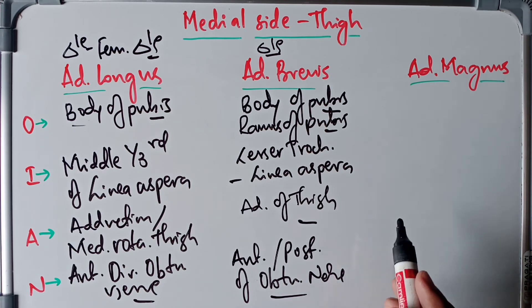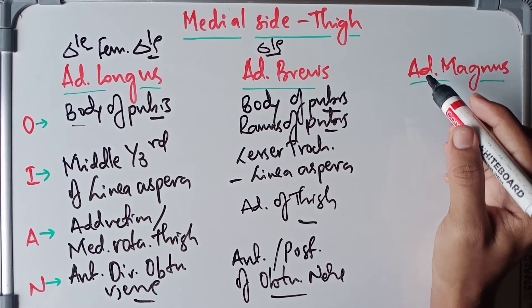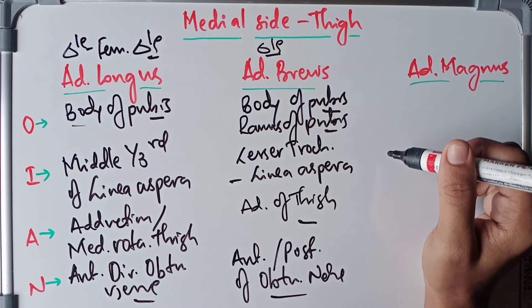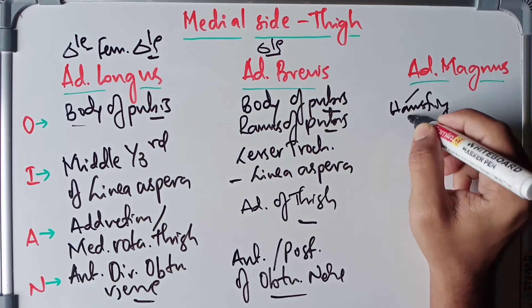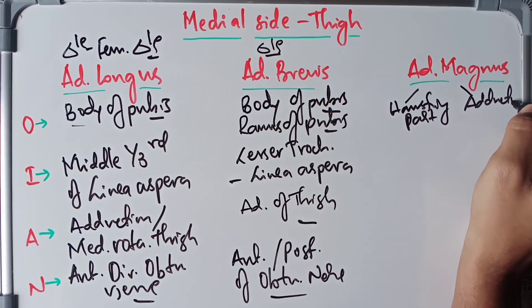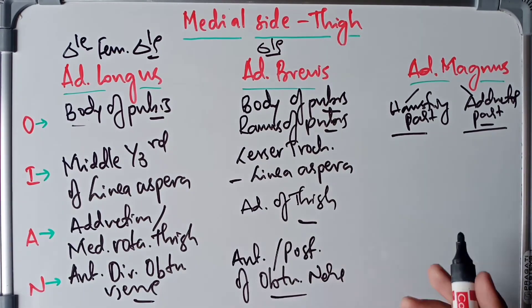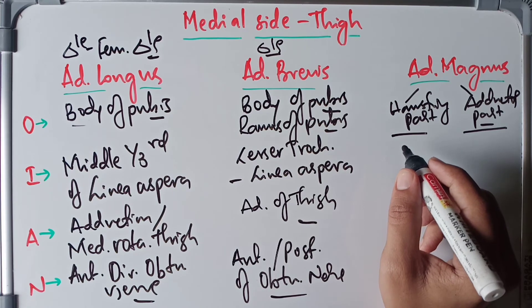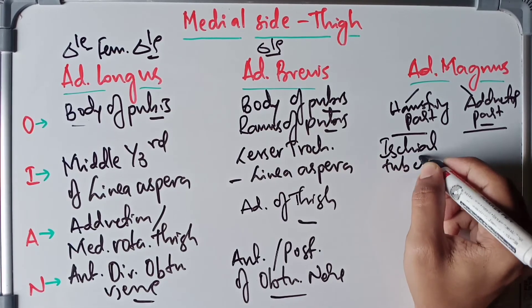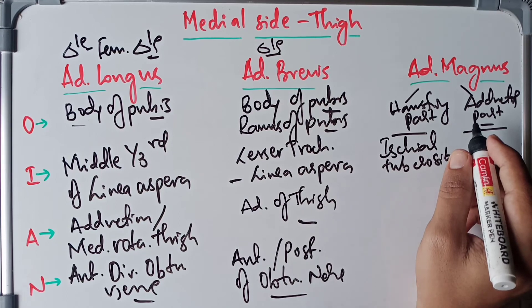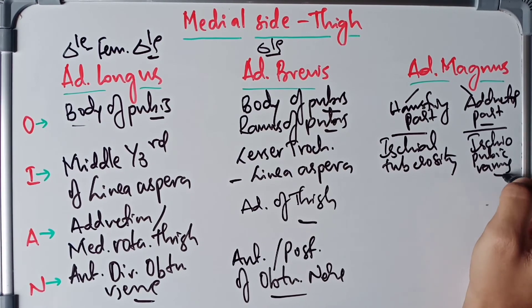The adductor magnus is a large composite muscle with dual innervations — one by the tibial part of the sciatic nerve and one by the obturator nerve. It has two parts: the hamstring part and the adductor part. The hamstring part arises from the inferolateral part of the ischial tuberosity, and the adductor part arises from the ischiopubic ramus.